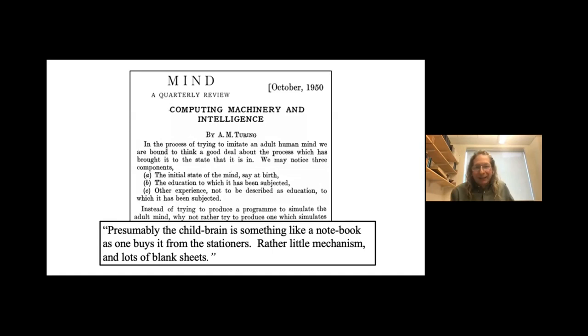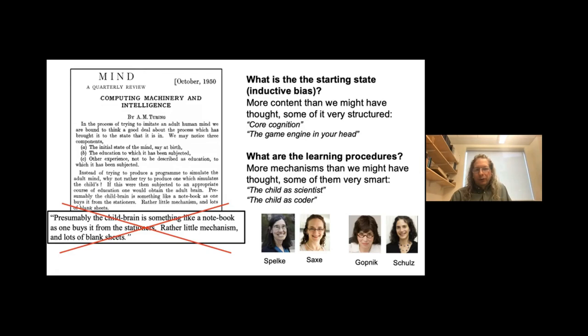Turing was brilliant and also wise, and he knew to put the word presumably there. He knew he didn't really know what he was talking about. Nobody had really seriously studied children's brains and minds. Presumably, as many people thought, maybe we as human learners start up as something like a blank slate. It's a classic idea in philosophy, as well as one that has been explored in earlier generations of psychology. But what we now know is that it's not right.